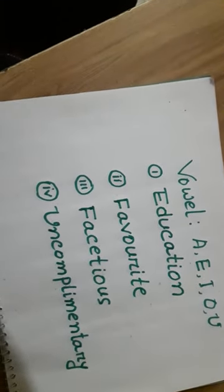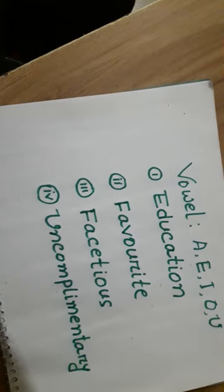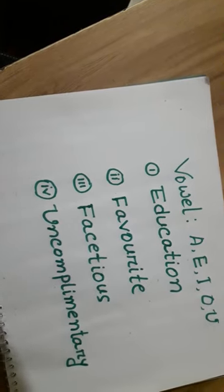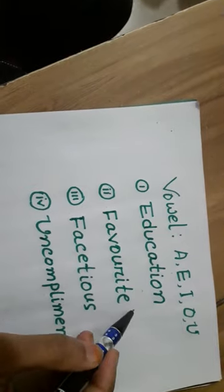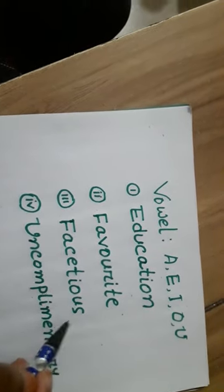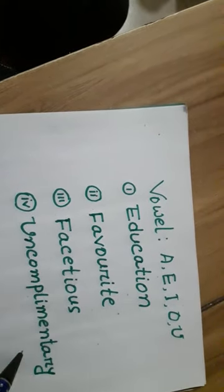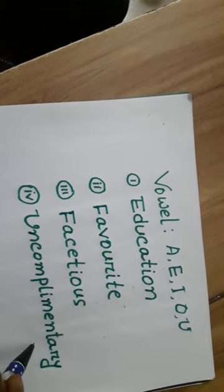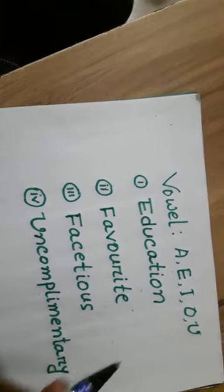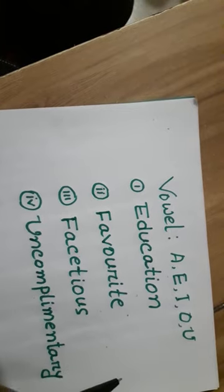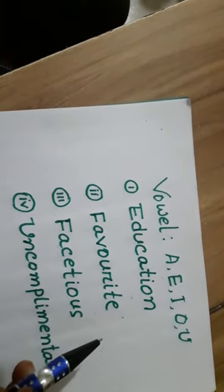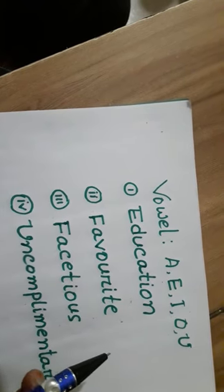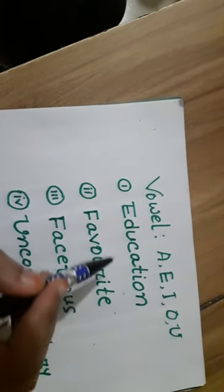Assalamualaikum viewers. Today I am going to discuss some very interesting words: education, favorite, facetious, and uncomplementary. For three reasons these words are very important. Reason number one: these words have all vowels. For example, education here has E, U, A, I, O - all vowels are here.